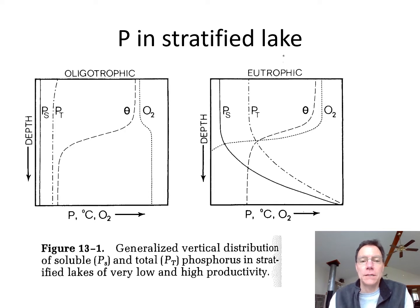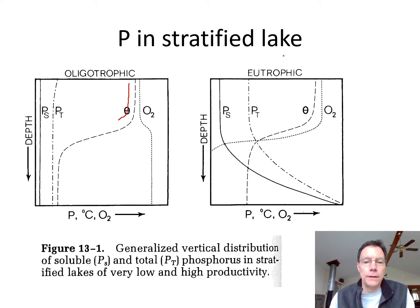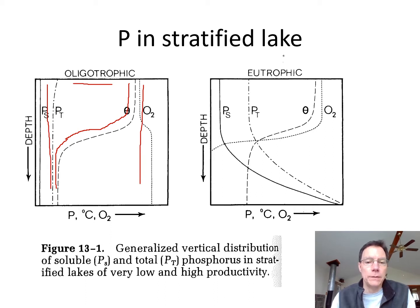We talked a little bit about nitrogen last time, so let's look at phosphorus quickly. We have our temperature profile here — a pretty typical temperature profile of a thermally stratified lake. In an oligotrophic lake, oxygen is pretty much the same all the way down, and phosphorus stays pretty much the same all the way down. PT stands for total phosphorus.